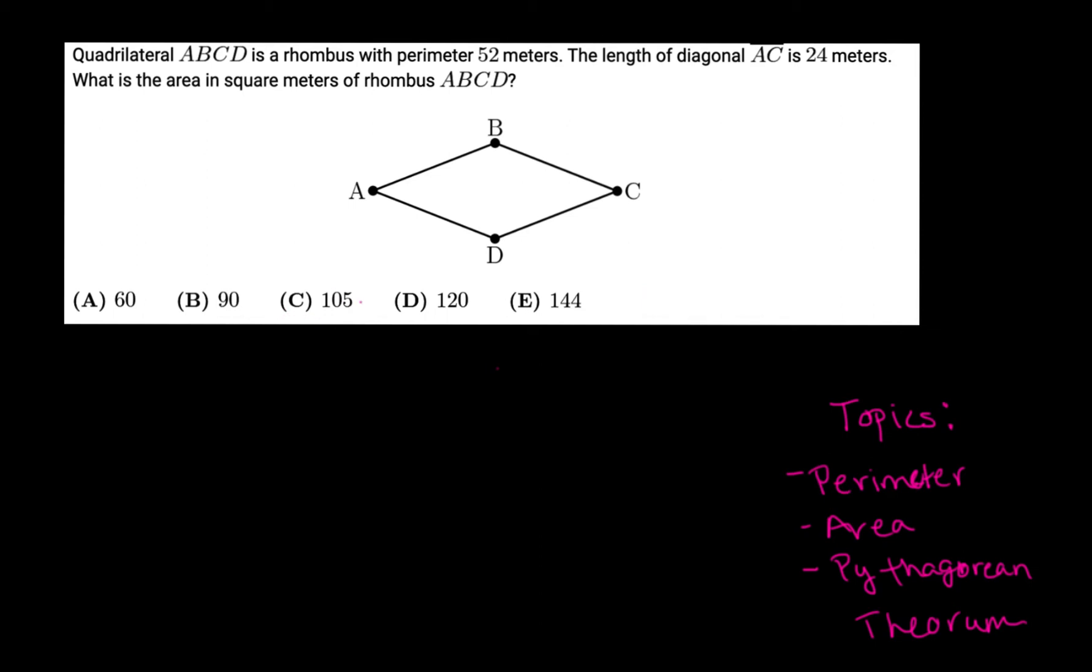I'm assuming you've given it a go. Let's get started. They're saying the length of AC, this diagonal right here, is 24 meters. We know with a rhombus that each of the sides are equal in length. If the perimeter is 52, each side will be 13, because with a rhombus all four sides are the same length.